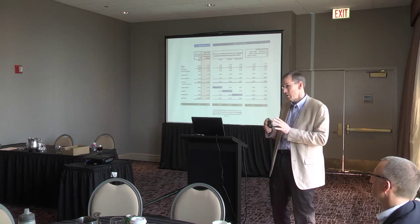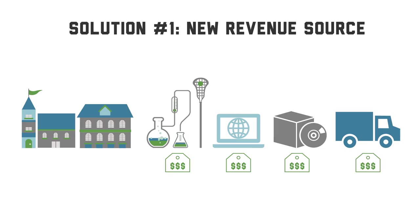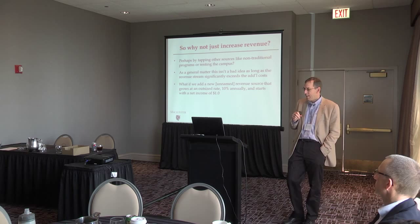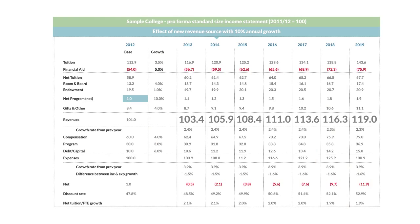Perhaps we could find a different or new revenue source — let's say we find something where we can bring people to our campus or otherwise sell or leverage something that grows at an outsized rate, 10% a year. If you go down to the bottom line, you see all those numbers are just about as red as they were before. That's because our base operation is so big that a new revenue stream at that scale is just not big enough to make a huge difference without still addressing the rest of what's going on.